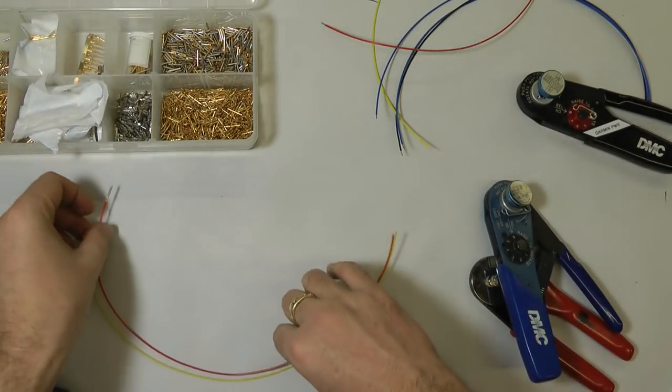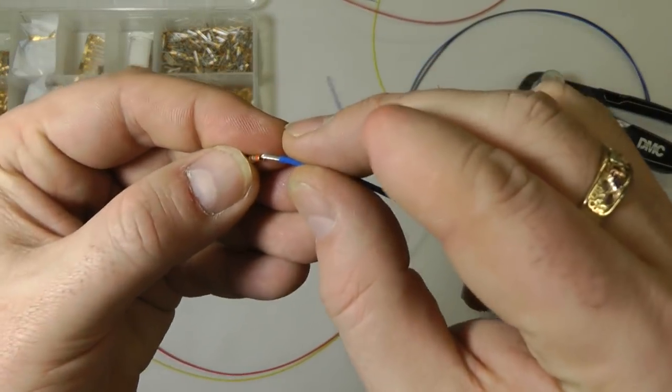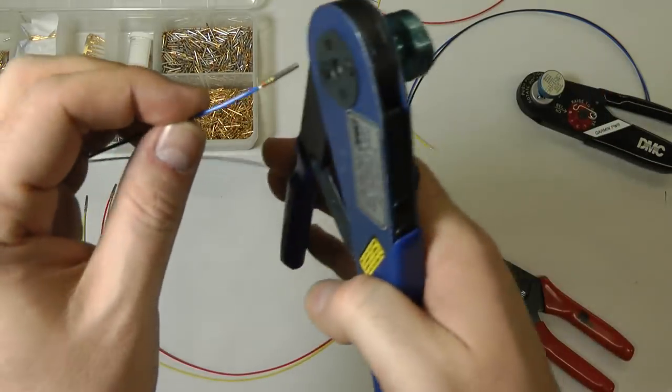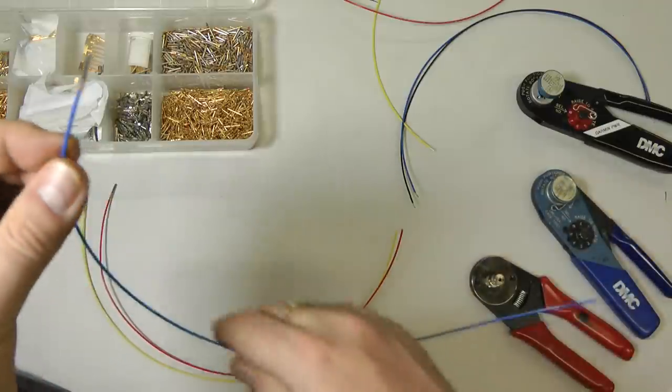And you can just continue on down that with male or female pins. You just take a wire, insert it into the connector or into the little pin, and insert it into your tool, squeeze, let go, and you're finished. And you just repeat.